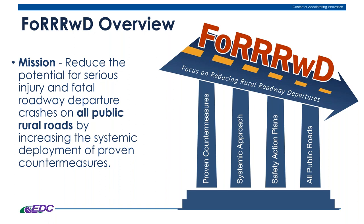Our initiative is called FORWARD — Focus on Reducing Rural Roadway Departures. Our mission is to reduce the potential for serious injury and fatal roadway departure crashes on all public roads by increasing the systemic deployment of proven countermeasures. We have four pillars: first, proven countermeasures — several of which you mentioned you've been installing. We definitely have ways to address these crash types, and while not every countermeasure works on every road, there's usually some way to address the core concept on almost any road type.